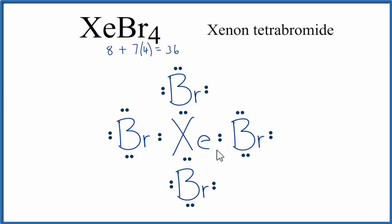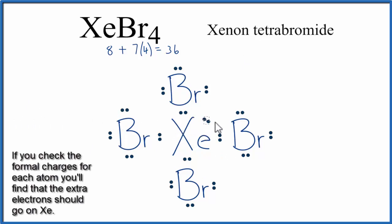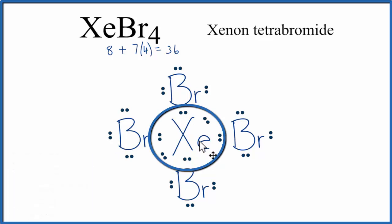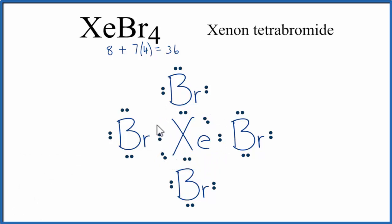Because xenon can have an expanded octet, we can place the remaining 4 valence electrons around the xenon, and we're now using all the valence electrons. Xenon has more than 8, but that's okay — it can have an expanded octet. Oftentimes you'll see the pairs of electrons involved in the chemical bond replaced with a line. Each line represents 2 valence electrons, so now you can see a little clearer these lone pairs of electrons on the central xenon.